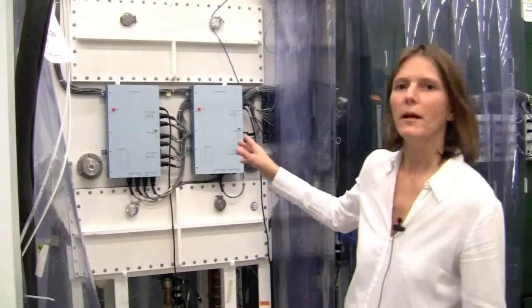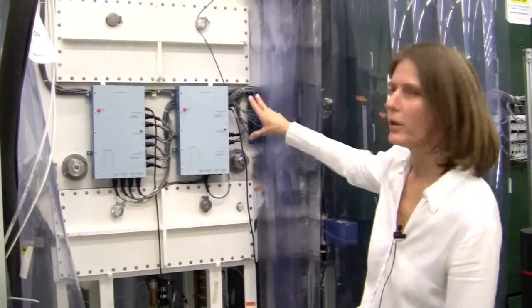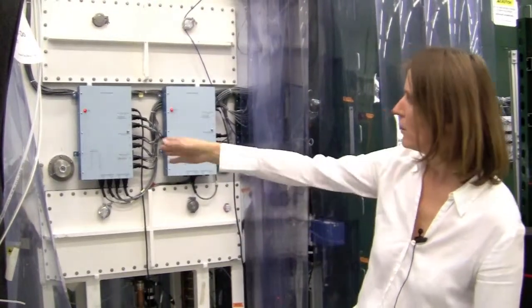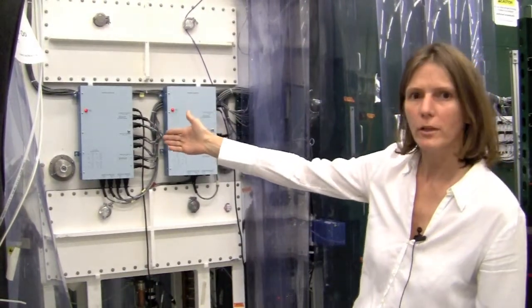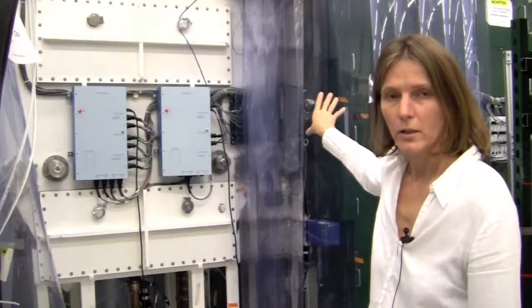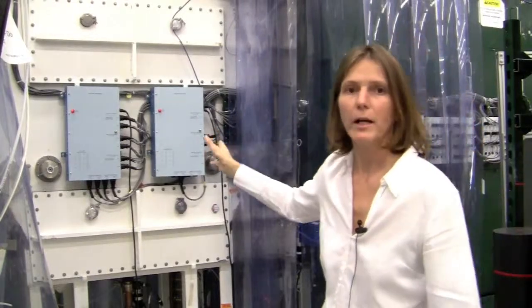So behind me, you see the first two modules of the superconducting linac structure, where the ions coming from the RFQ at about 3.6% of the speed of light get injected into the superconducting linac section that you see behind me. And there they get further accelerated to the final energy that is required by the experiment.